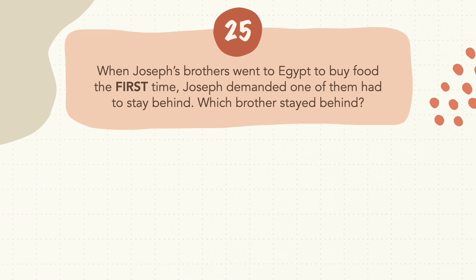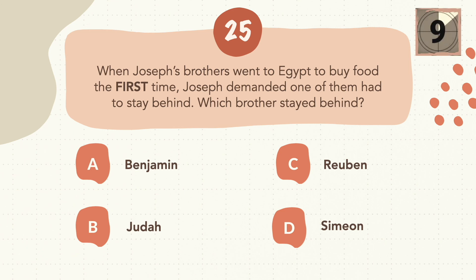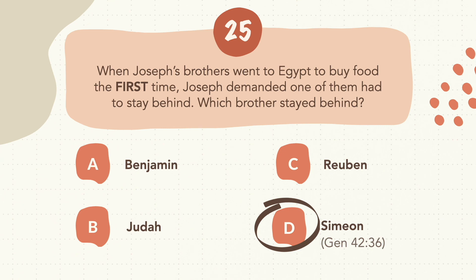Question 25: When Joseph's brothers went to Egypt to buy food the first time, Joseph demanded one of them had to stay behind. Which brother stayed behind? The correct answer is D, Simeon.